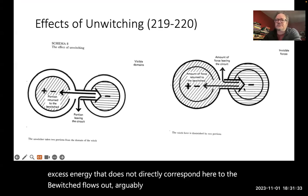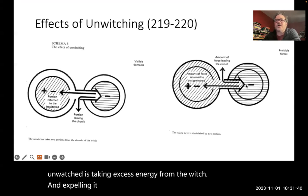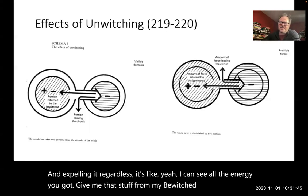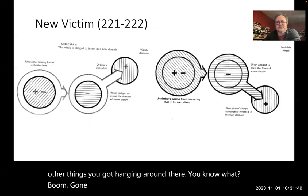Now, arguably, you could also say that the unwitcher is taking excess energy from the witch and expelling it regardless. It's like, oh yeah, I can see all the energy you got. Give me that stuff from my bewitched, but I can see some other things you got hanging around there. You know what? Boom. Gone. That's going somewhere else.